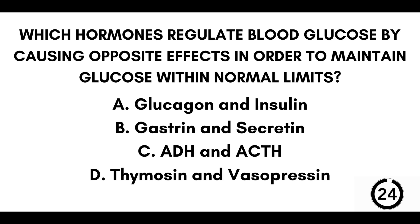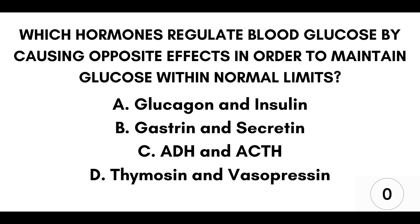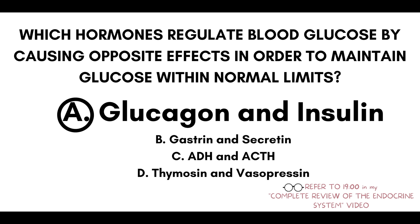Question number seventeen: which hormones regulate blood glucose by causing opposite effects in order to maintain glucose within normal limits? A) Glucagon and insulin. B) Gastrin and secretin. C) ADH and ACTH. Or D) Thymocin and vasopressin. Our answer here is A, glucagon and insulin.